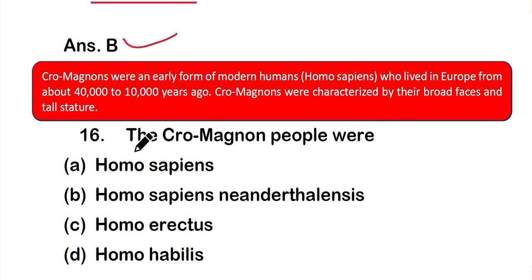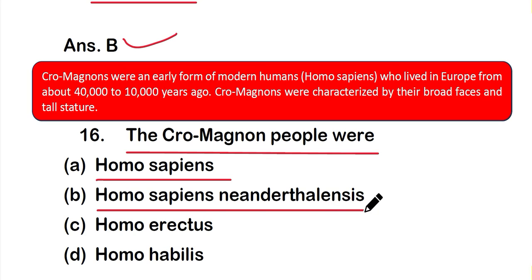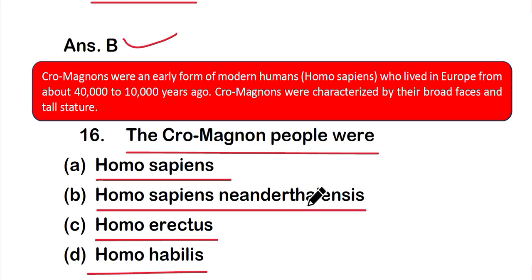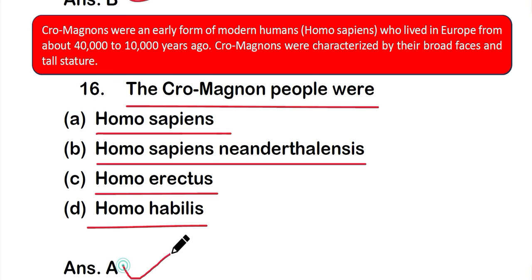Question 16: The Cro-Magnon people were — option A: Homo sapiens, option B: Homo sapiens neanderthalensis, option C: Homo erectus, or option D: Homo habilis. The correct answer is option A — Cro-Magnon people were Homo sapiens.